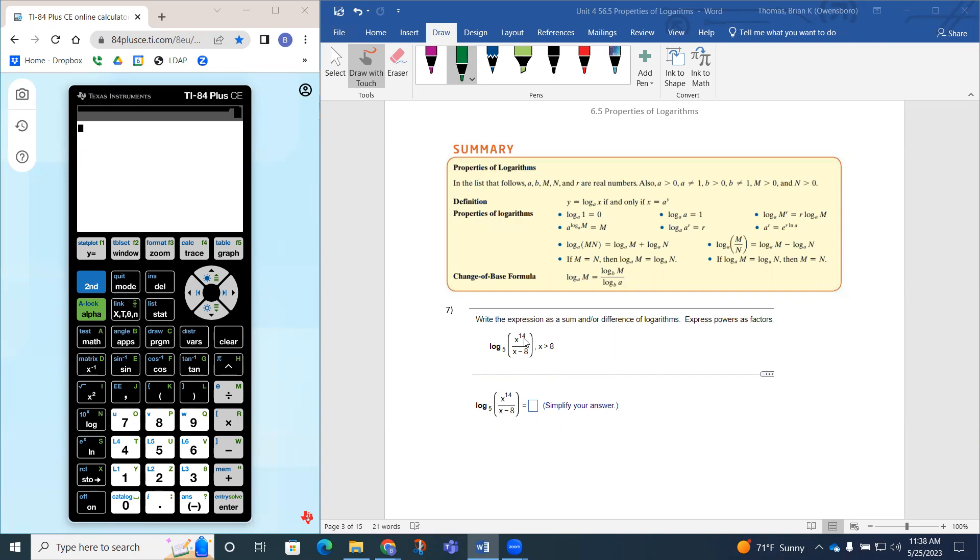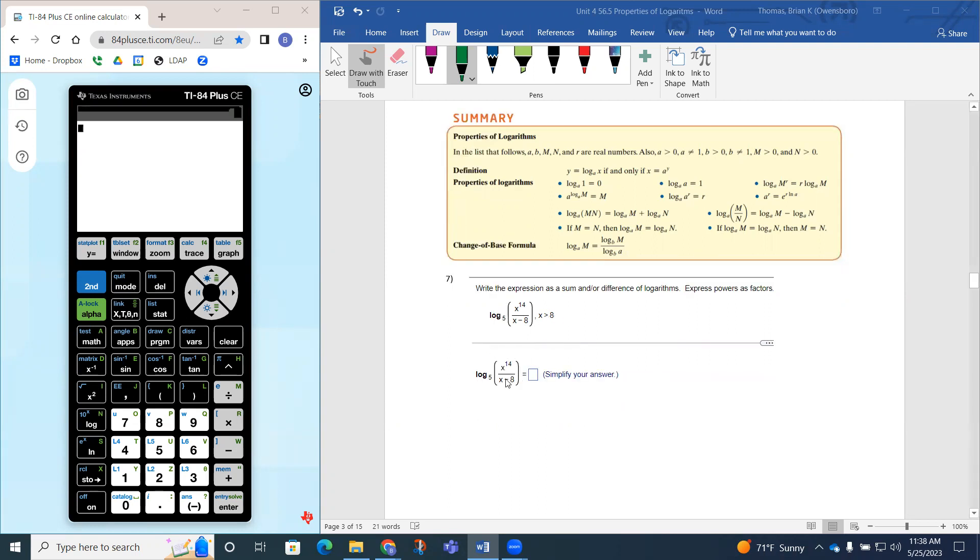Notice the numerator, because the power is even, the only thing we can't have in the numerator is 0. But since you're saying x is greater than 8, that's already taken care of that. So all we really got to worry about is this piece here. This is just the domain restriction.